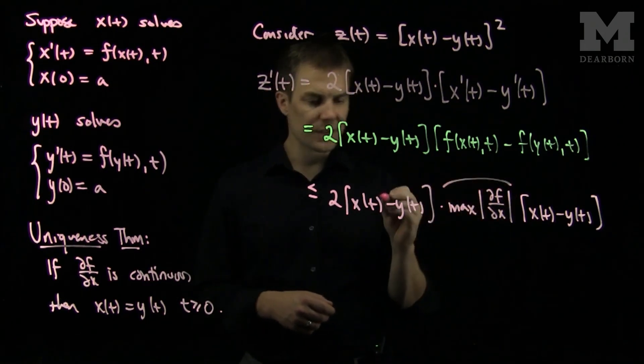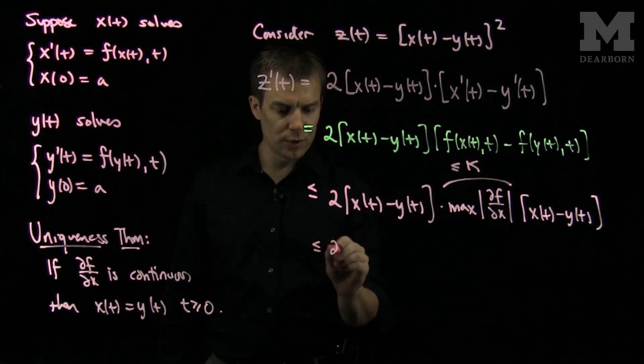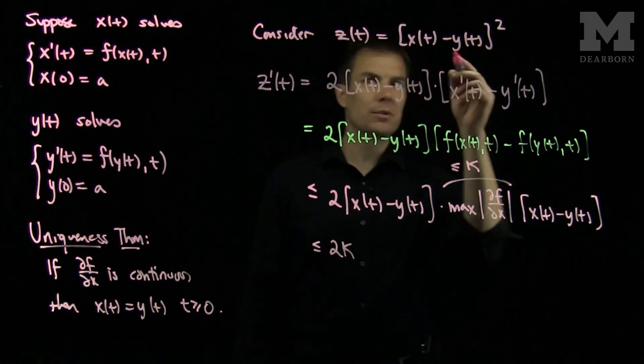This, since the derivative is a continuous function, is less than some constant k. So, this is less than or equal to 2k, and I have x of t minus y of t times x of t minus y of t, which is exactly z of t.